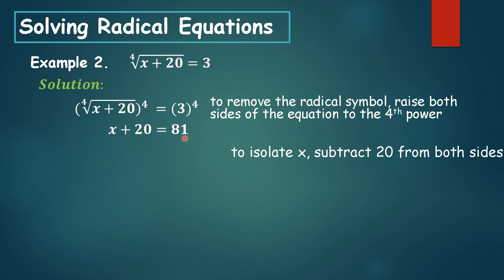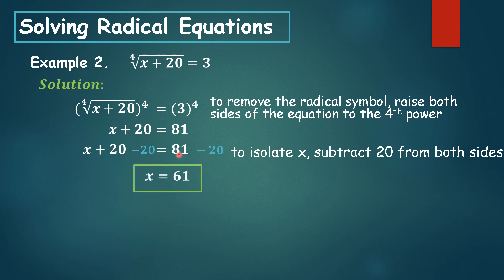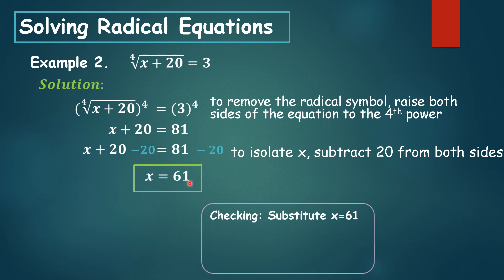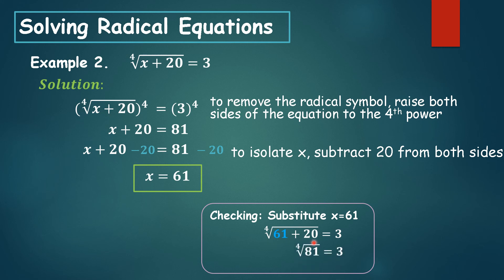To isolate x, subtract 20 from both sides of the equation. 20 minus 20 is 0, so x is on the left, and 81 minus 20 is 61 on the right. To check, substitute 61 into the equation: 61 plus 20 equals 81, and the fourth root of 81 is 3. So it's correct.